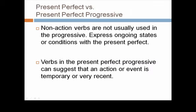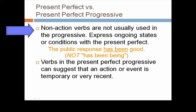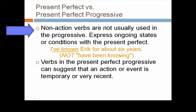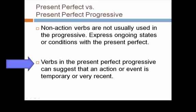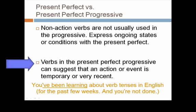Let's talk about some important differences between the present perfect and the present perfect progressive. First, non-action verbs are not usually used in the progressive. So we express ongoing states or conditions with the present perfect. For that reason, we said the public response has been good. We don't say has been being good. Another example, I've known Eric for about six years. I wouldn't say I've been knowing Eric for about six years, because be and know are non-action verbs. Second, verbs in the present perfect progressive can suggest that an action or event is temporary or very recent. For example, you've been learning about verb tenses in English.